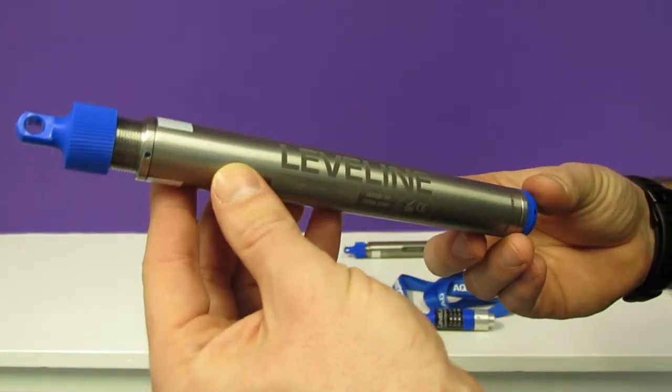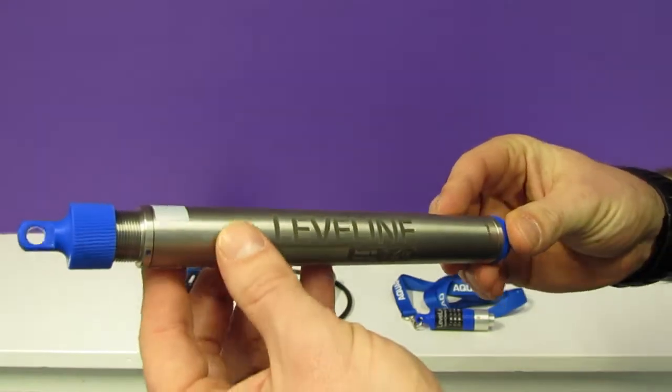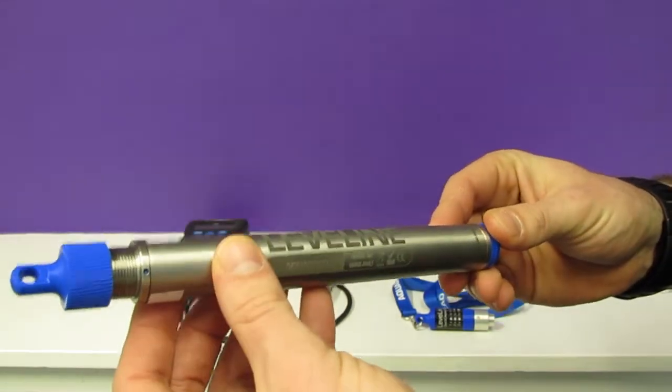This is the Levelline Water Level and Temperature Logger. This particular model is constructed from titanium, though we do also do a model that's constructed from stainless steel.